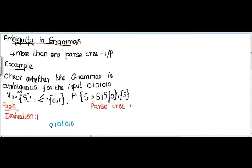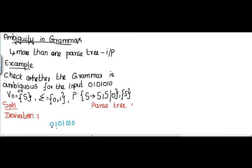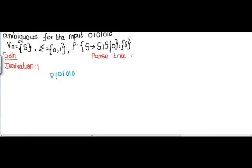I am going to start solving this. First, I will write derivation 1 and its corresponding parse tree simultaneously. Since my start symbol is S, I will start with S. The first character I need is 0. If I substitute S → 0, I cannot proceed further, so I choose S → S1S.